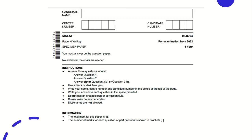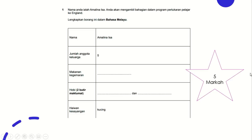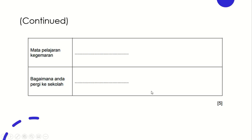Now we're going to look at the Paper 4 Writing specimen paper. It's a one-hour paper. The first one, Bahagian 1, you need to lengkapkan borang dalam bahasa Melayu — fill in the form. For example: jumlah anggota keluarga anda, your family members, how many people; makanan kegemaran, your favourite food; hobby; haiwan kesayangan; mata pelajaran kegemaran; bagaimana anda pergi ke sekolah. The mark for Bahagian 1 is 5.